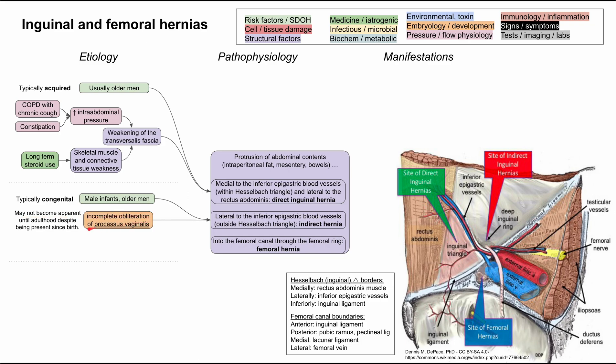The indirect inguinal hernia happens when you have incomplete obliteration of the processus vaginalis. The processus vaginalis is an outpouching of the parietal peritoneum that extends through the inguinal canal. Normally, this peritoneum goes through the inguinal canal and is obliterated by birth. When it's not obliterated by birth, it can result in an indirect hernia either at birth or later in life.